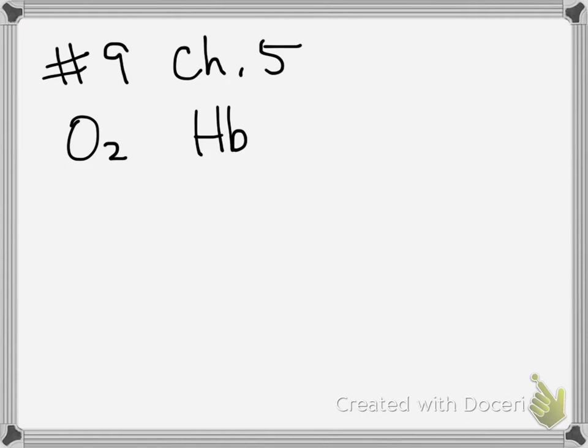I had a request to do number 9 in the Chapter 5 homework. So number 9 is talking about oxygen binding and hemoglobin structure. It's setting up a situation where they're saying that a team of biochemists use genetic engineering to create a new kind of hemoglobin, and the version of hemoglobin they make exists primarily as alpha-beta dimers.